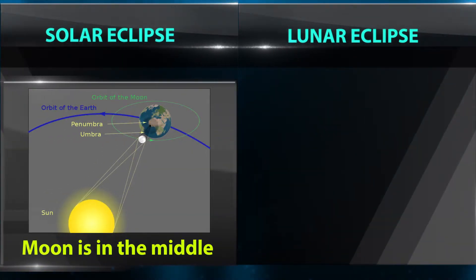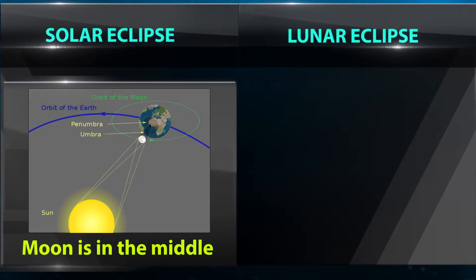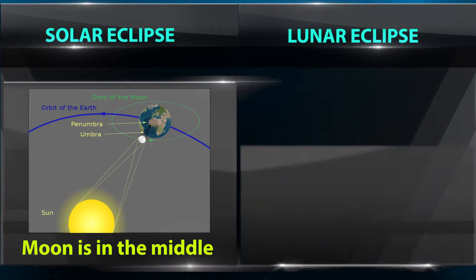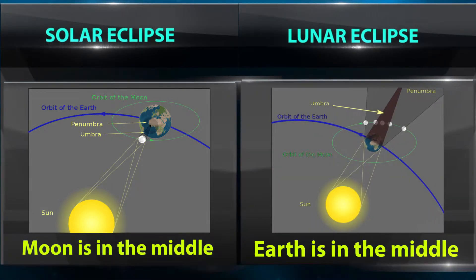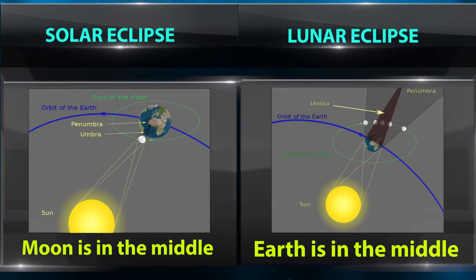In Solar Eclipse, Moon is in the middle. In Lunar Eclipse, Earth is in the middle.